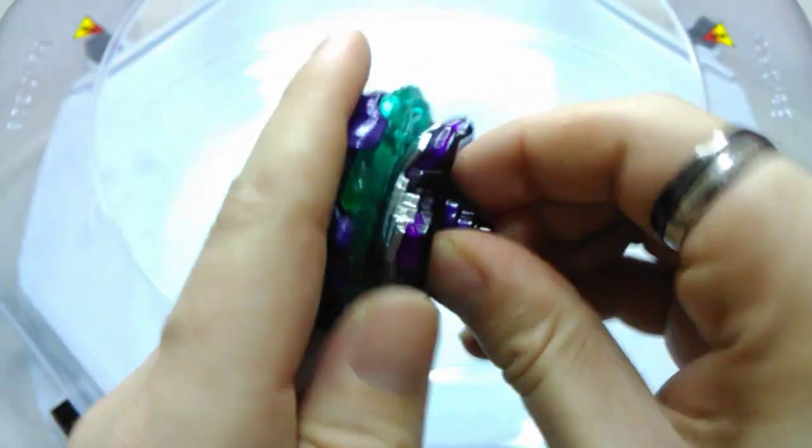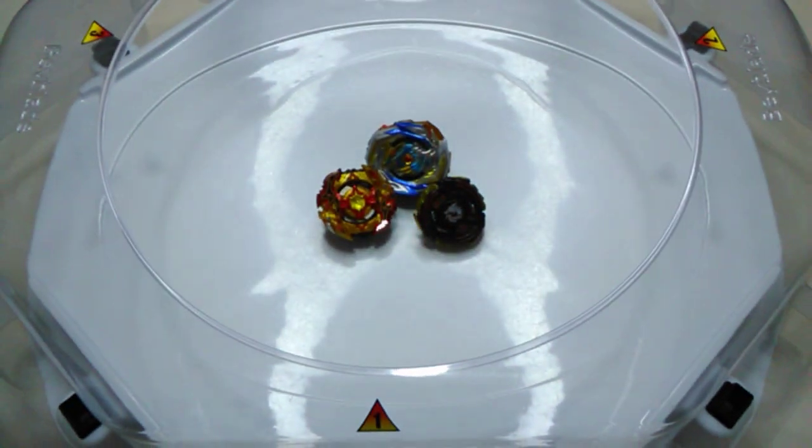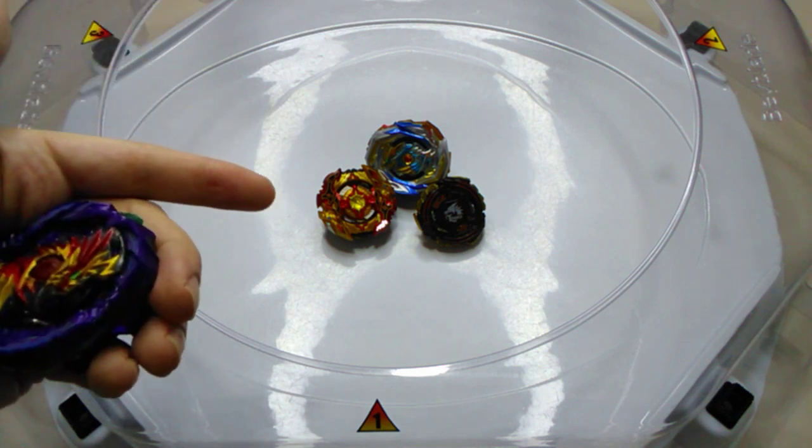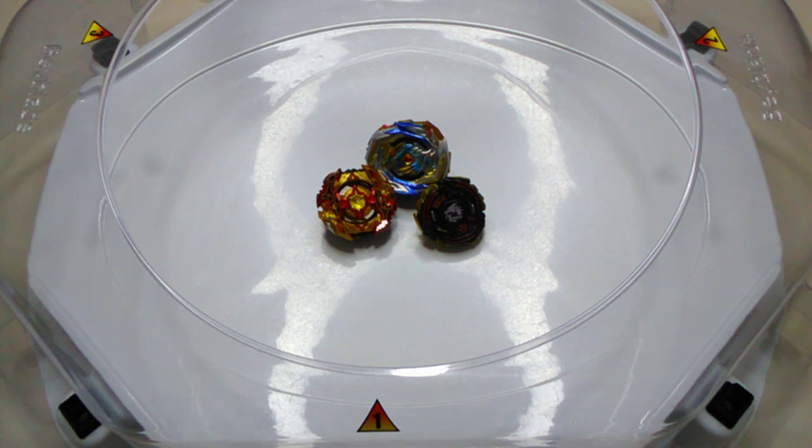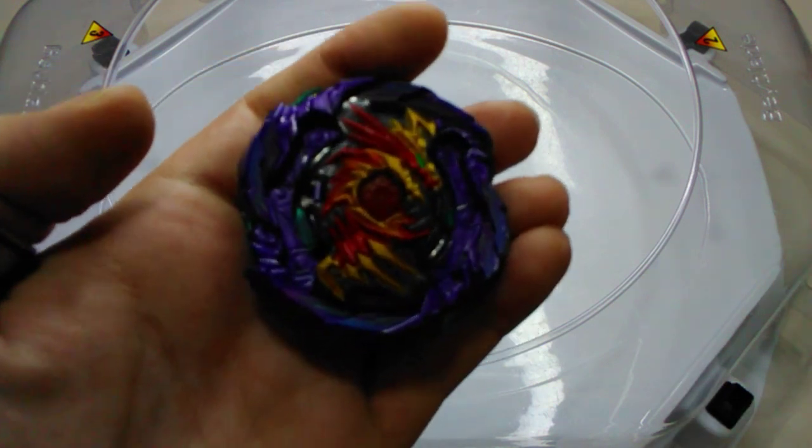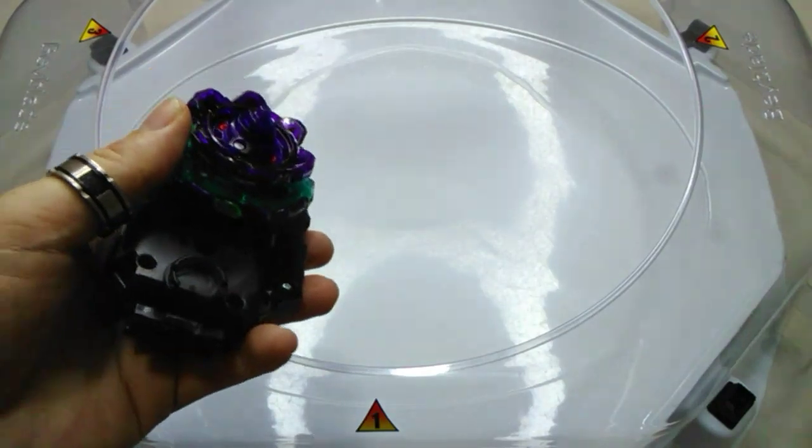We will be going up against some pretty top tier beys just to show how good this combo is. So we have Imperial Dragon, Chosy Spriggan, and El Drago. We will be doing first to two points using the larger stadium and let's get stuck into some action.